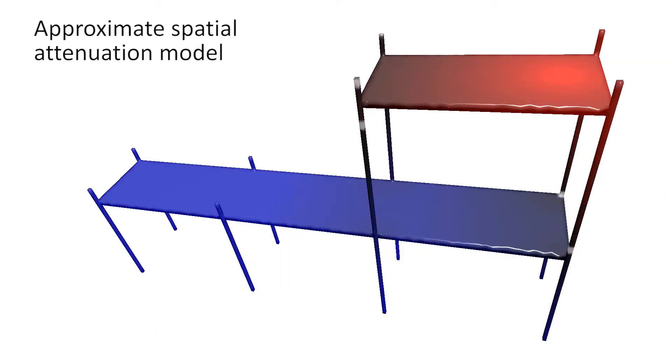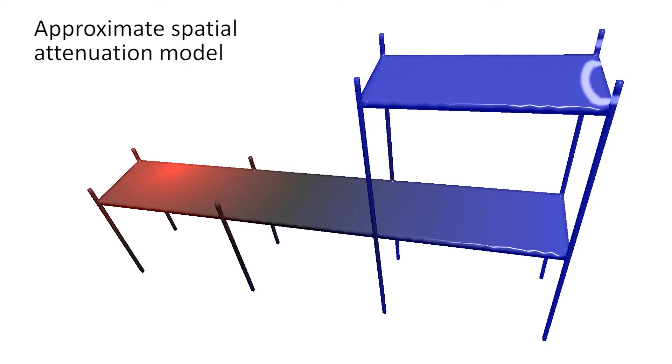For larger objects such as terrain or scaffolding, we use the geodesic distance and a spatial attenuation model to compute the decay of traveling waves.